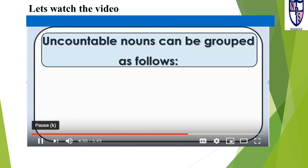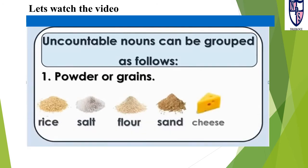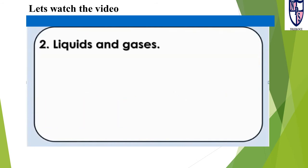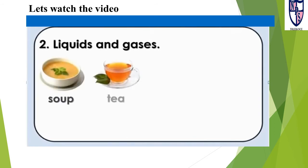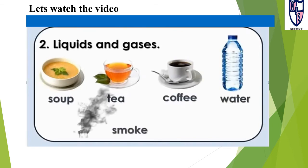Uncountable nouns can be grouped as follows. Powders or grains: rice, salt, flour, sand, cheese, cake, etc. Liquids and gases: soup, tea, coffee, water, smoke, fog.